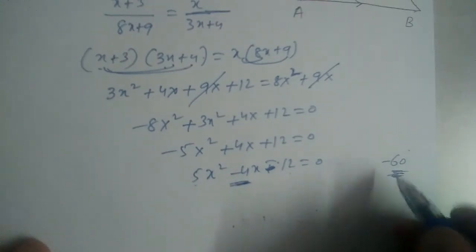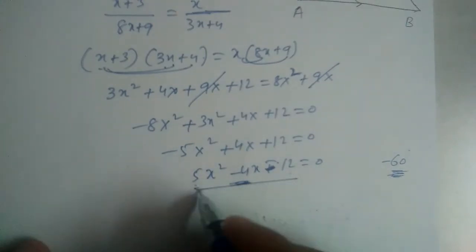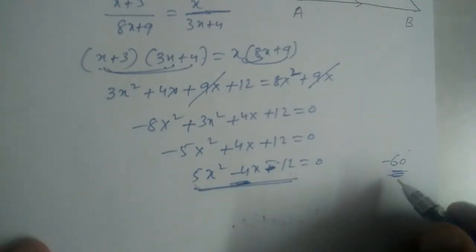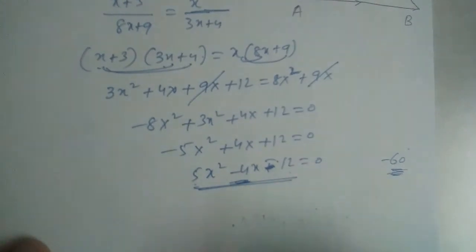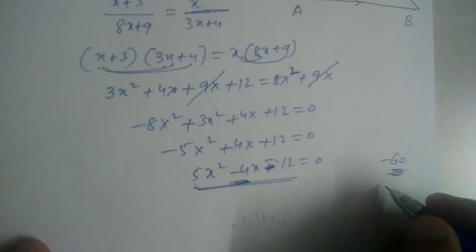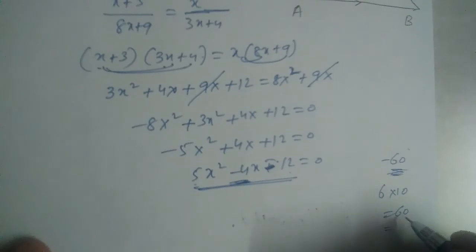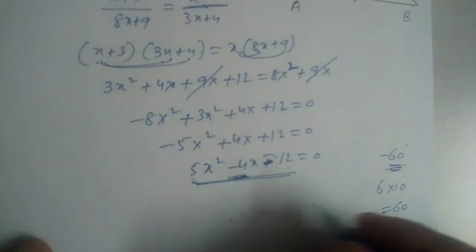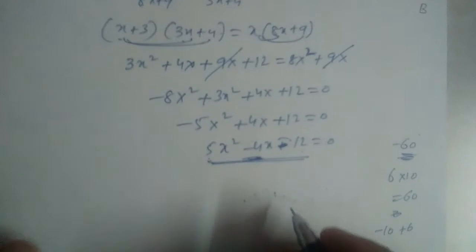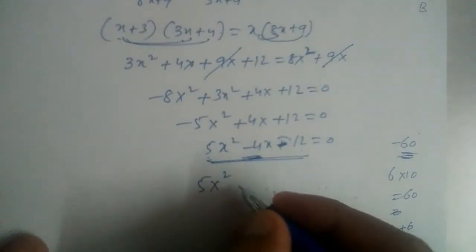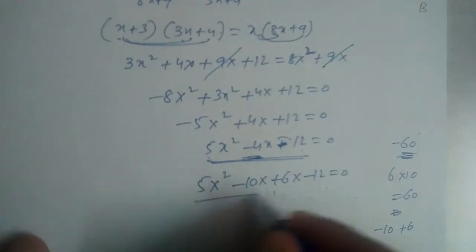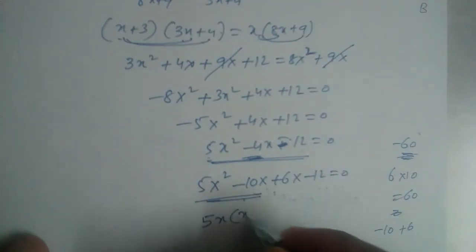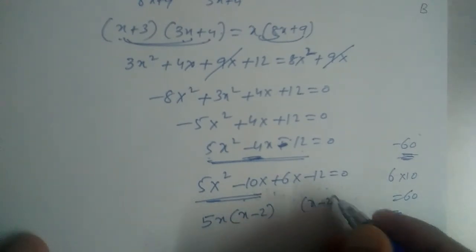We need two numbers whose product is −60 and whose sum is −4. If you don't know how to solve this, I highly recommend watching the polynomials factorization video on splitting the middle term. The numbers are −10 and +6, since 6 × 10 = 60 and −10 + 6 = −4. So we write: 5x² − 10x + 6x − 12 = 0.